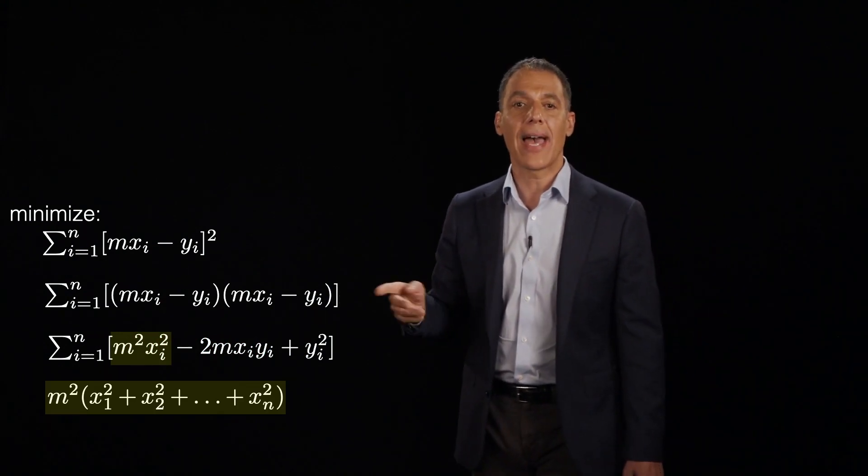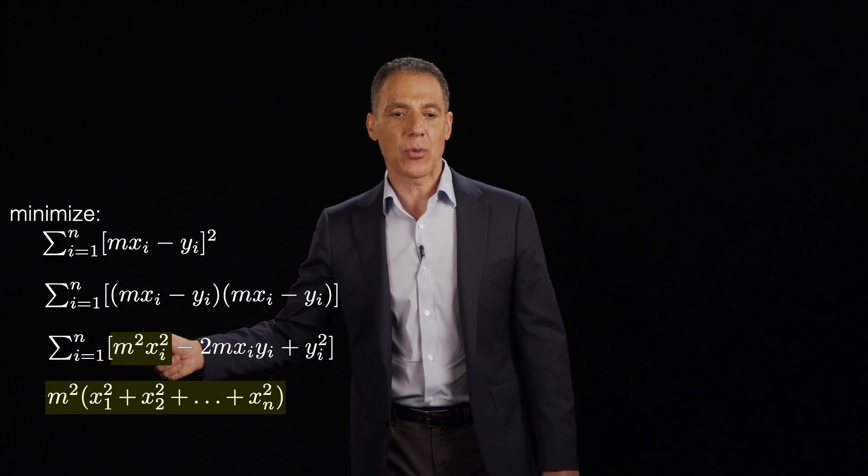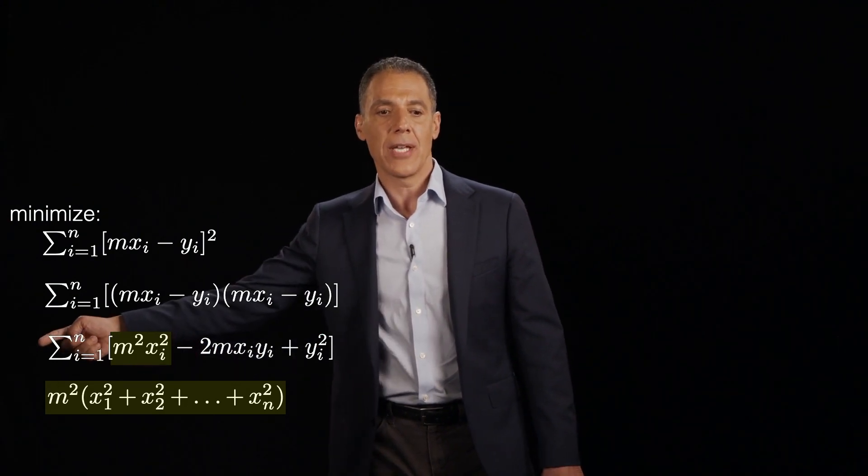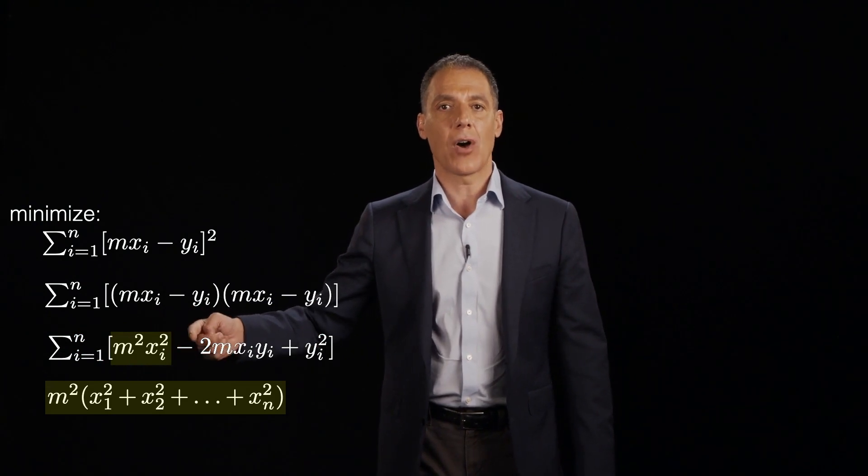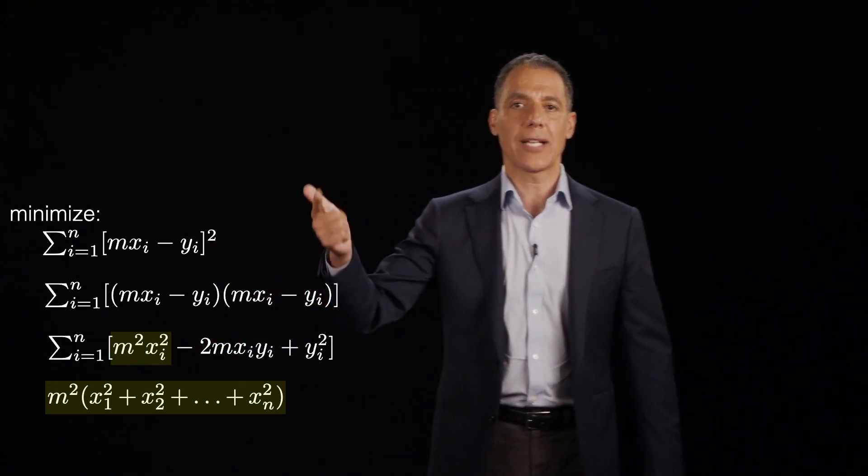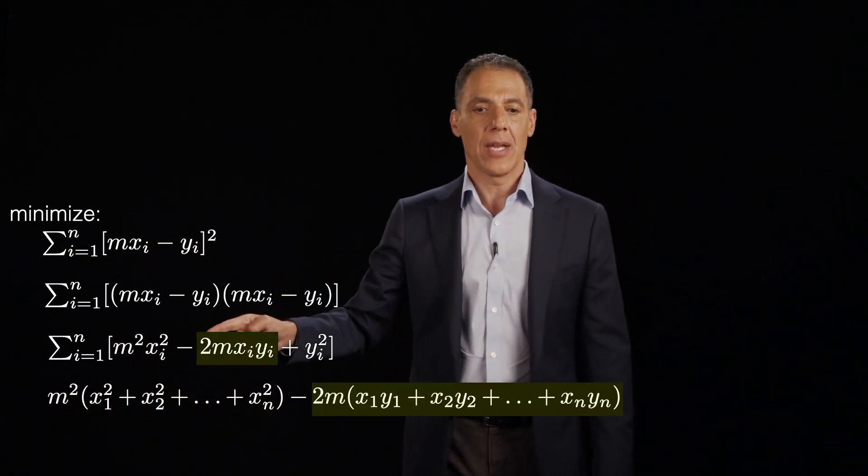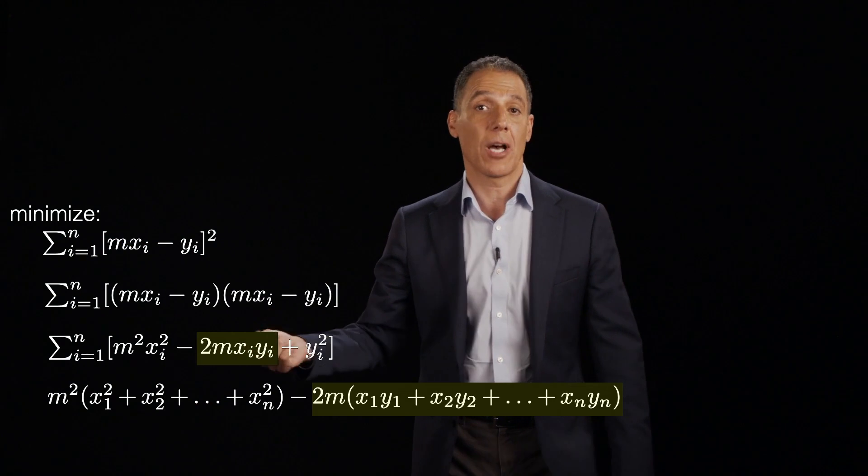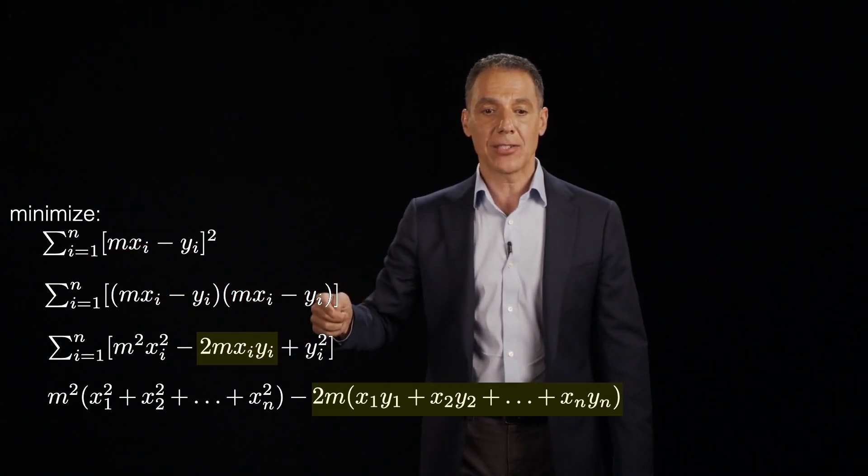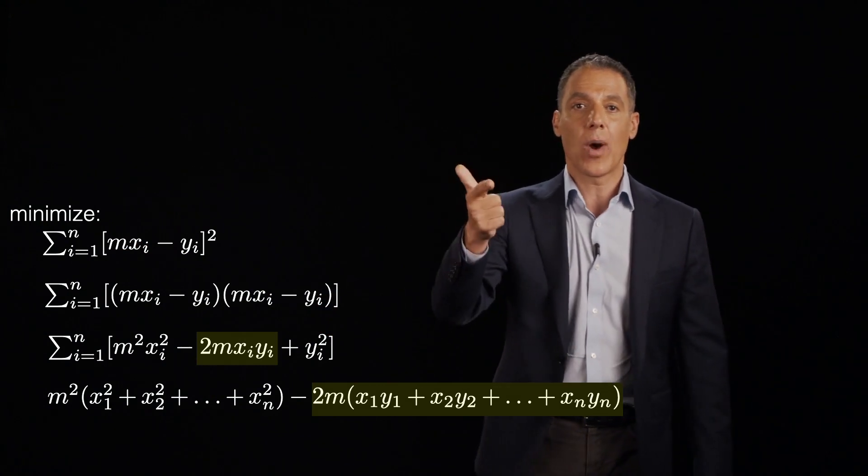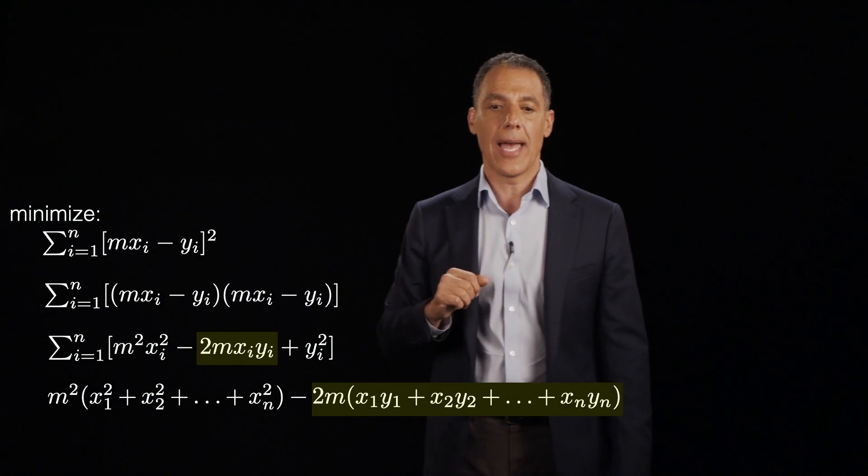So what do I have here? That m squared doesn't depend on the indexing variable, so I can pull that out and then it's m squared times what? The sum of the squares of all the x component, x1 squared, x2 squared, up to xn squared. Okay, so that's the first term. The second term is 2m comes out of the summation because it doesn't depend on it. And then I've got 2m times x1y1 plus x2y2 plus x3y3 all the way up to n.